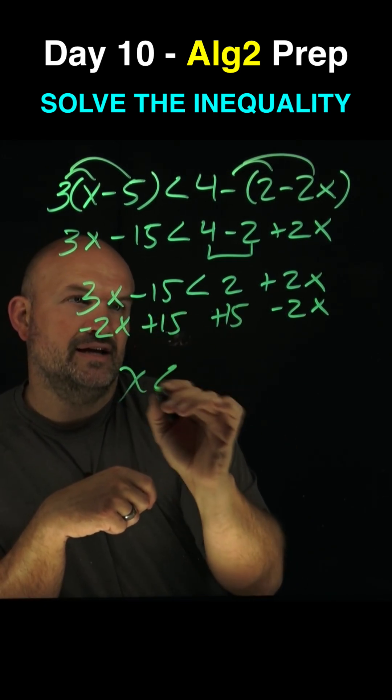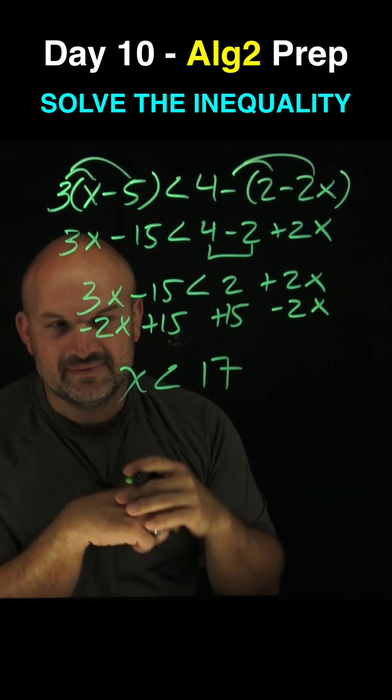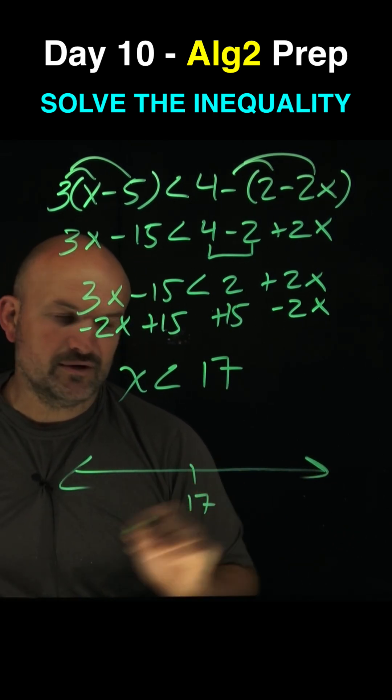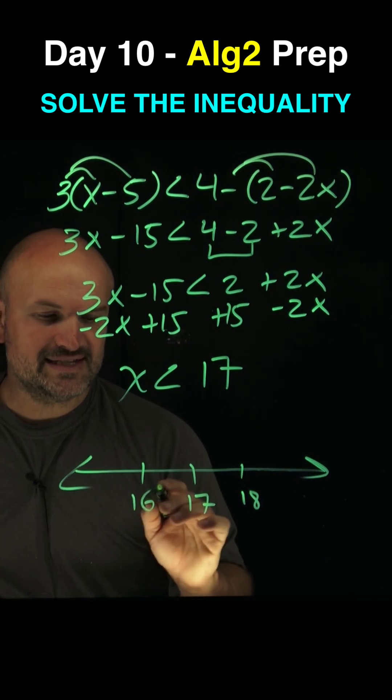So therefore, x is going to be less than 17. Now for an inequality, we want to make sure we can go ahead and graph this. So let's put 17 here right in the middle. I could say 18 would be to the right, and 16 would be to the left.